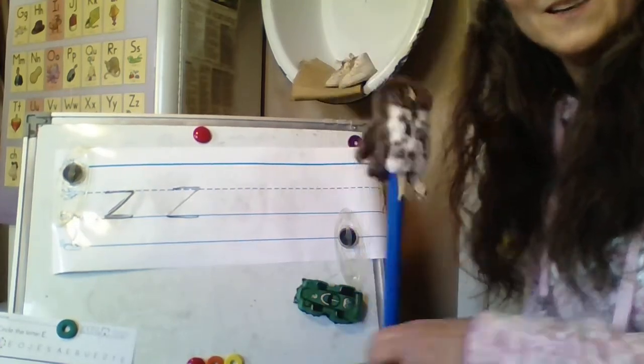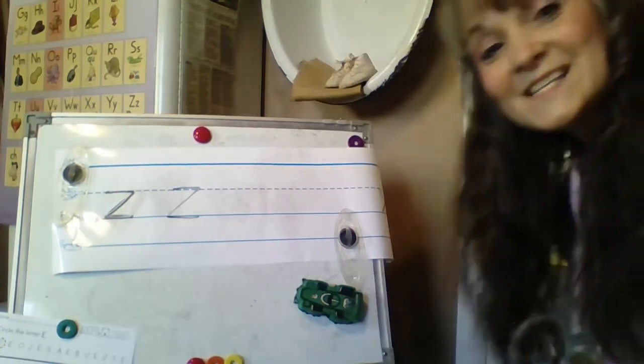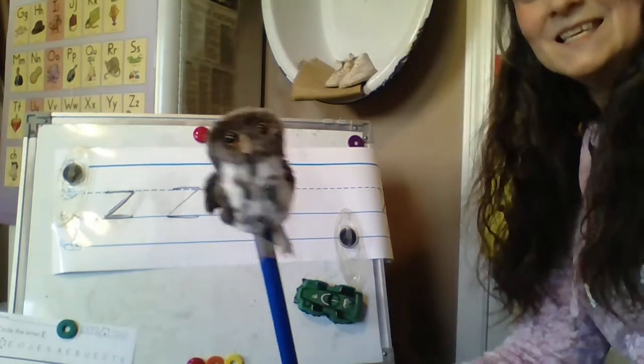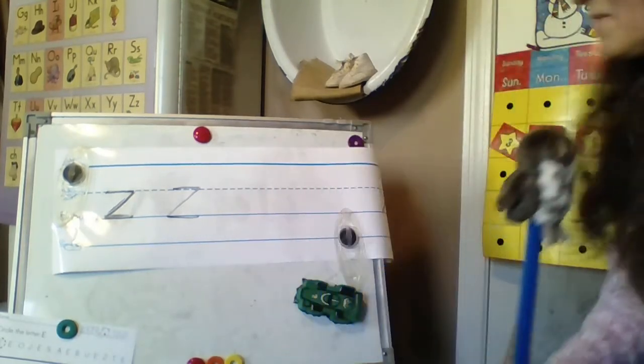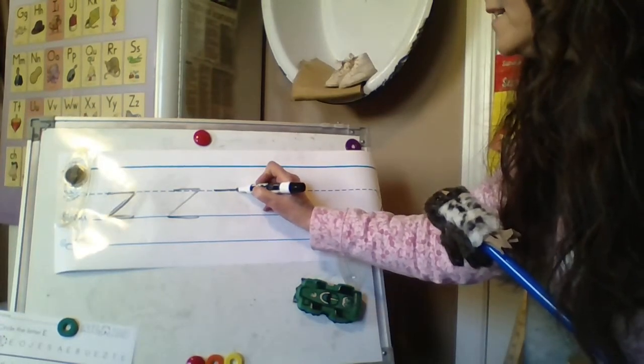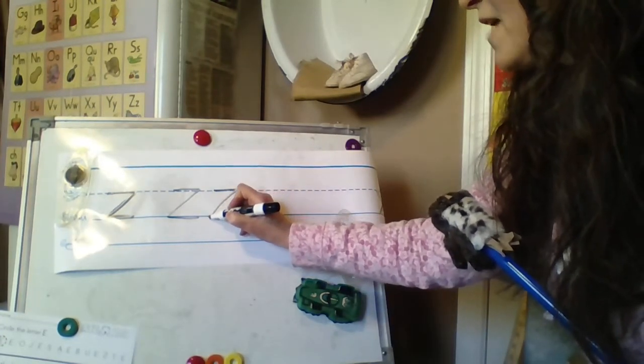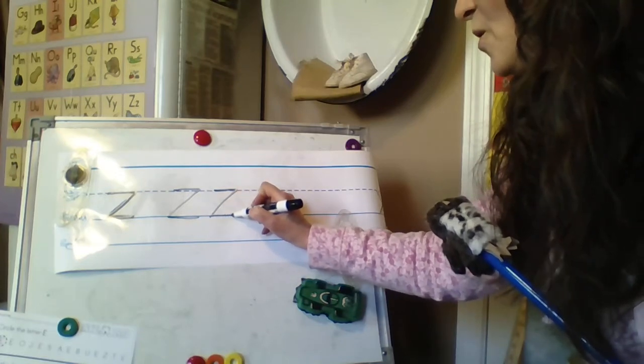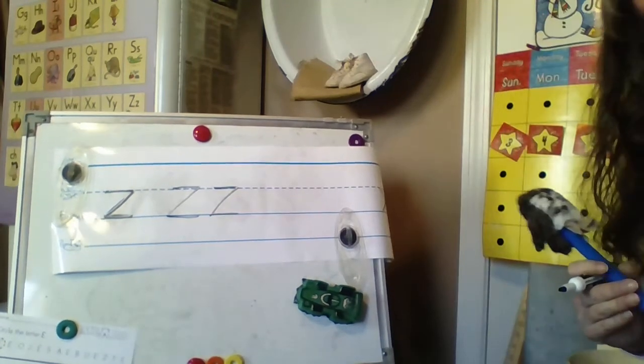Then go on the grass line. Z, zebra, z. Z, zebra, z. Very good. I think we've got that. Go on the plain line. Slide down to the grass line. Go on the grass line. We've got that.